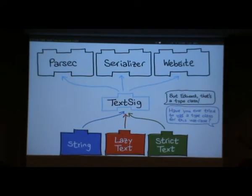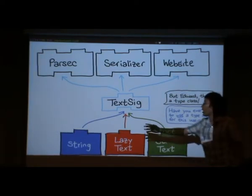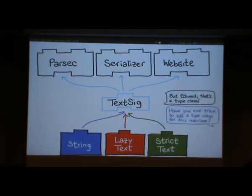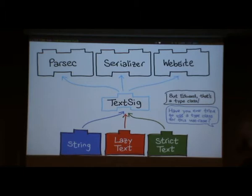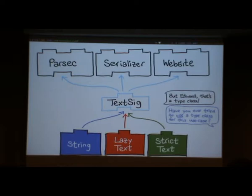There's something in common with all of these libraries and all of these implementations, and that thing is a signature. A signature is trying to tell you what it is that a module is trying to give you — or, as an application writer, it says what it is that a library is trying to provide you. The point of a module system is to try to make it possible to talk explicitly about these signatures.